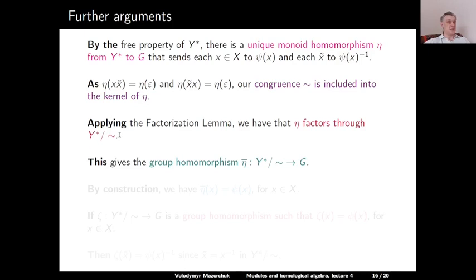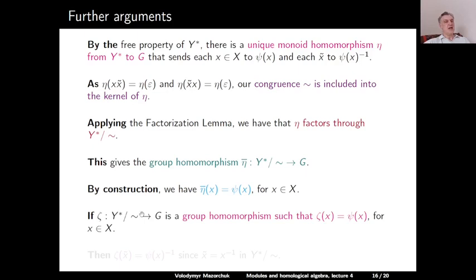Note that η(x·x̃) equals η(x)·η(x̃), which is ψ(x)·ψ(x)⁻¹, which is the identity element. Similarly, η(x̃·x) equals η(ε). This means exactly that our congruence ~ is included in the kernel of η, so each class of ~ is a subset of the kernel. We can therefore apply the factorization lemma: η factors through the canonical projection onto Y* modulo ~, giving us a group homomorphism η̄ from the quotient to G. Directly from the construction, η̄(x) equals ψ(x), so η̄ makes our diagram commutative.